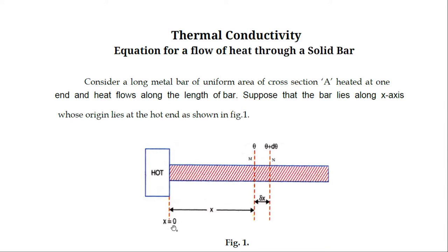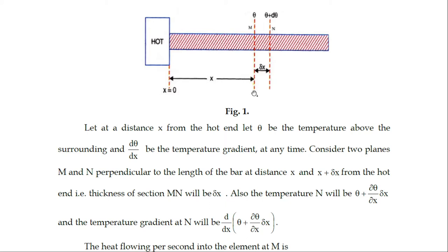At x = 0 is the hot end. At a distance x from the hot end, let θ be the temperature above the surroundings and dθ/dx be the temperature gradient at any time. Temperature gradient is the ratio of small change in temperature with respect to small change in distance along the x-axis.